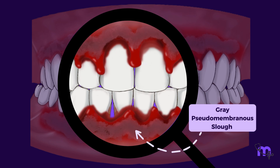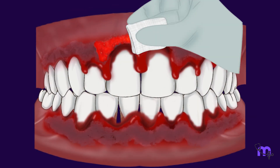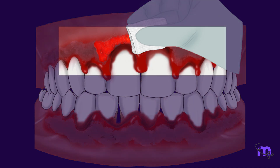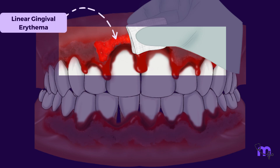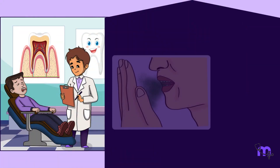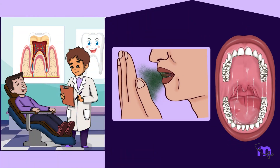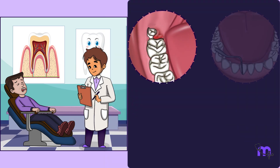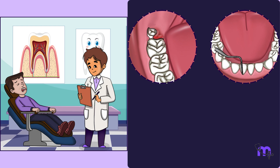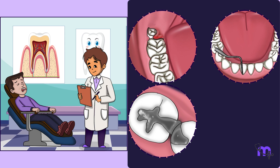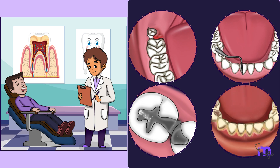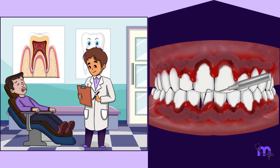A grey pseudomembranous slough may cover the gums, which peels off easily, leaving red, shiny, hemorrhagic gingiva beneath that bleeds spontaneously or even with the slightest stimulation. This slough is demarcated from the remaining oral mucosa by a red line called the linear gingival erythema. There can also be fetid odour and increased salivation. Presence of pericoronal flaps, periodontal pockets, and local risk factors such as poorly contoured and ill-fitting restorations, and distribution of calculus must be checked. Periodontal probing of ANUG lesions is postponed in the initial visit as it is very painful.